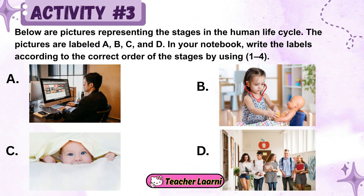Activity number three: below are pictures representing the stages in the human life cycle. The pictures are labeled A, B, C, and D. In your notebook, write the labels according to the correct order of the stages by using 1 to 4.